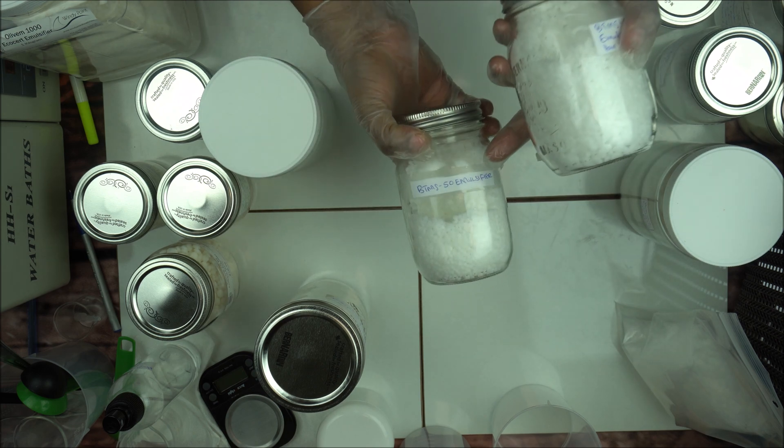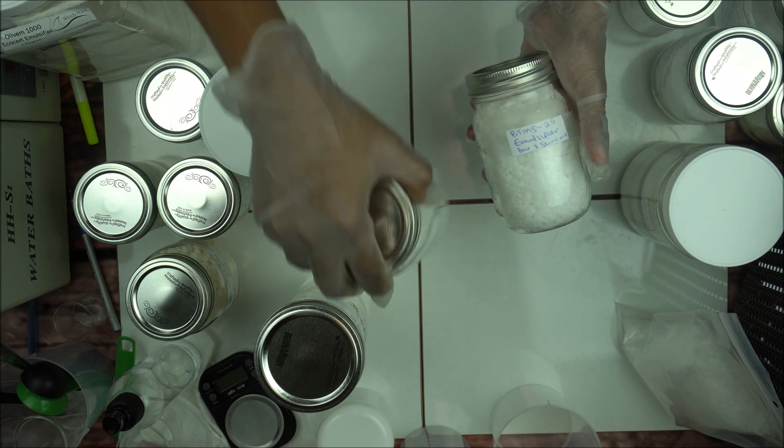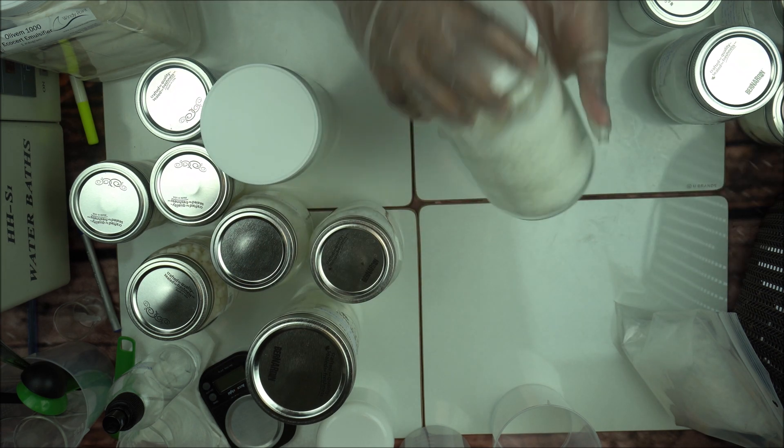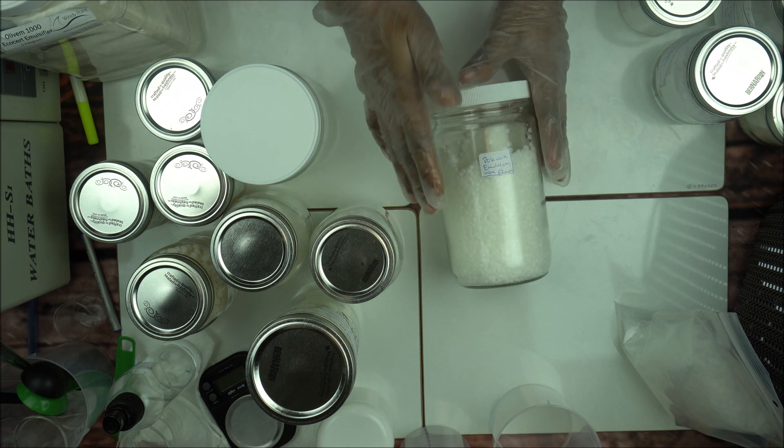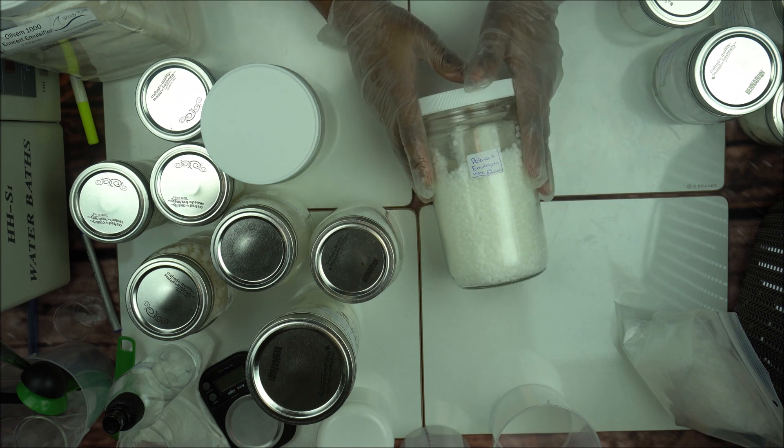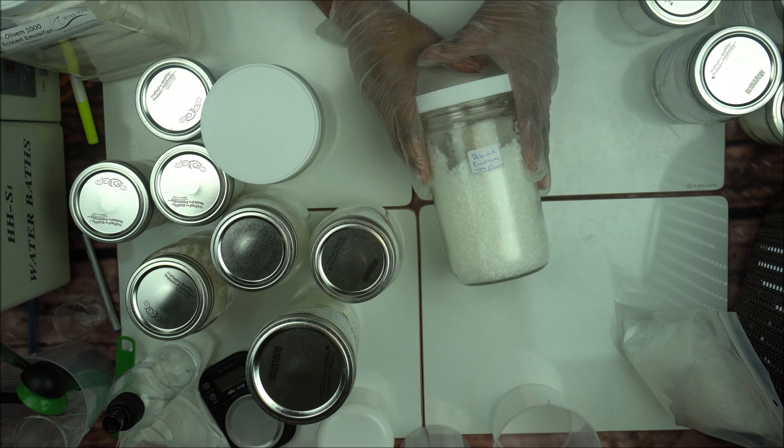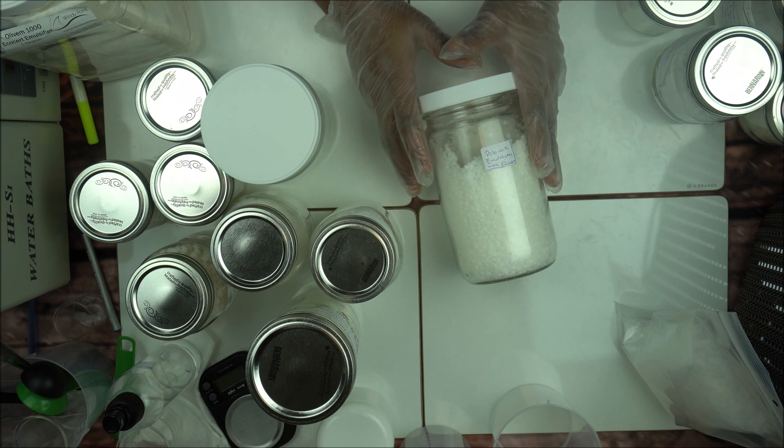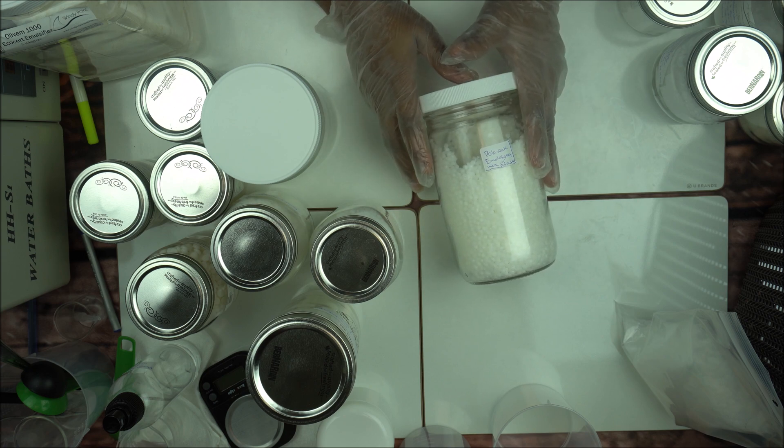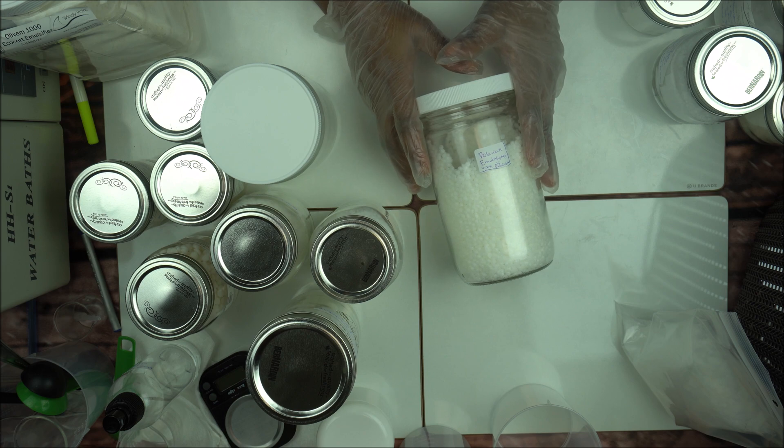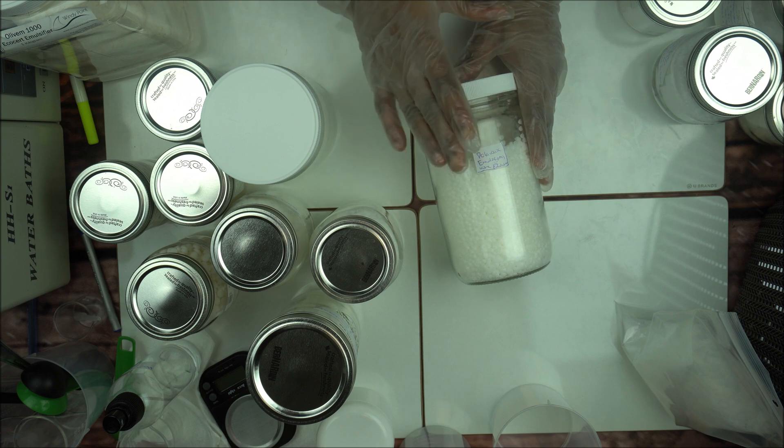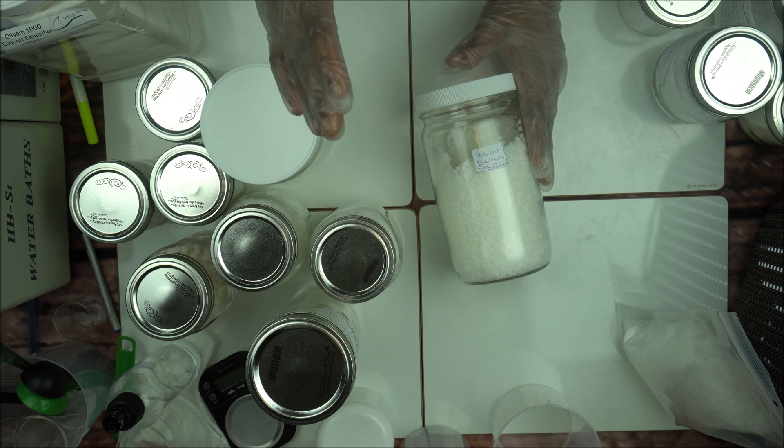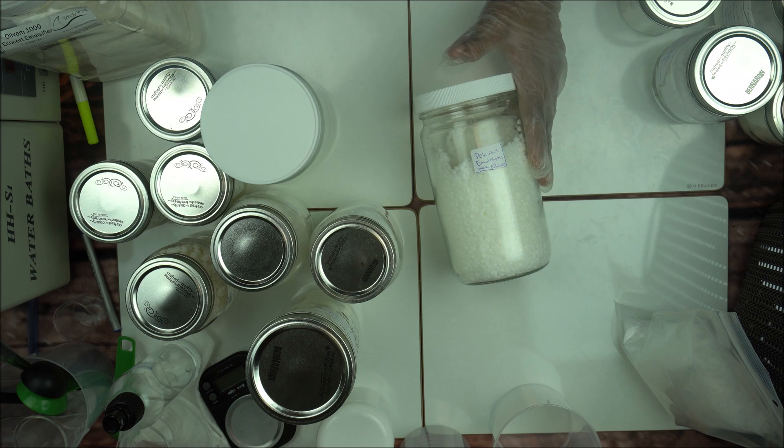Now let's go for Polawax. Polawax is also an emulsifying wax, but I think it's more stable, more preferred. It gives more stable product. You can use it as a lone emulsifier if you add fatty acids. So this is a very good Polawax. It produces better, I mean less soaping effect than when you use Olivem 1000, so it's a very good emulsifier.